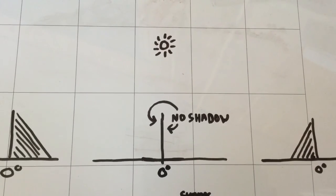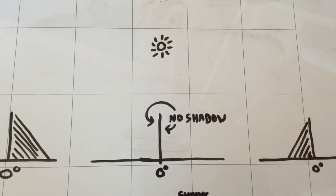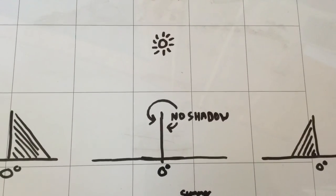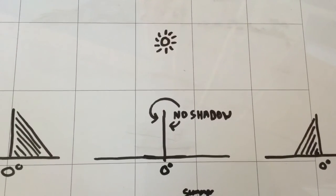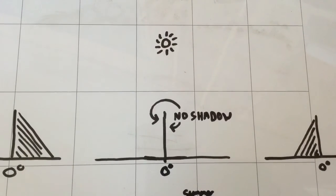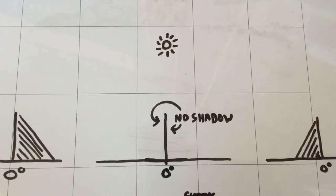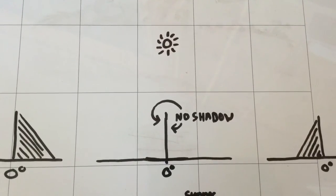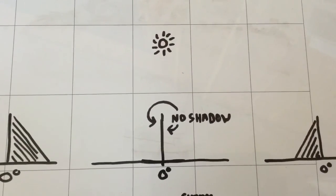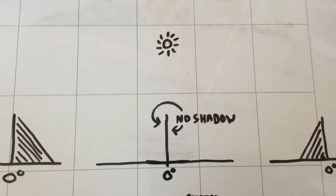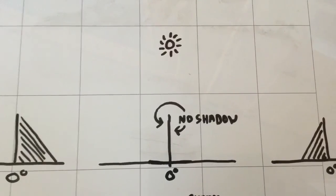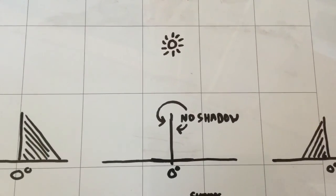I drew some pictures to explain it. If you were standing on the perfect point under the sun during the equinox — the equator, as they advertise — you'd set up the device straight up and have no shadow on either side during that equinox day.